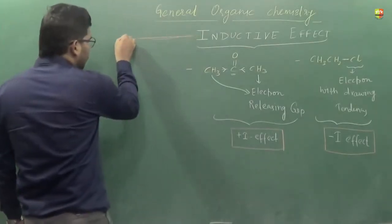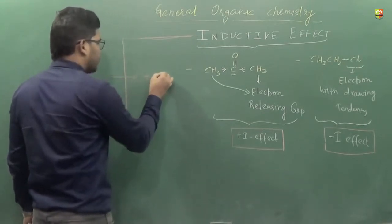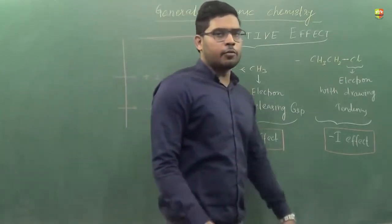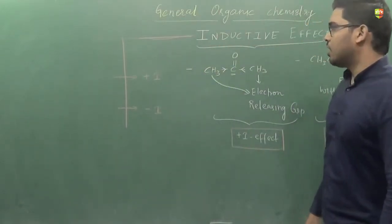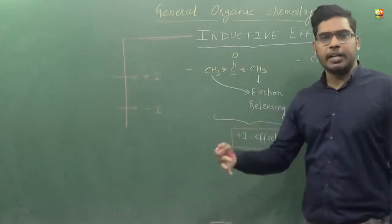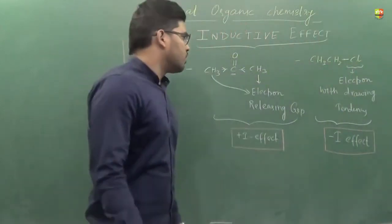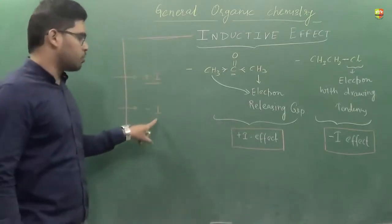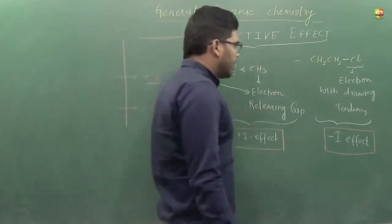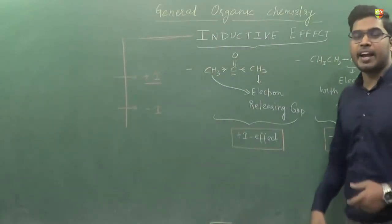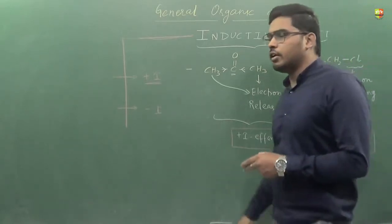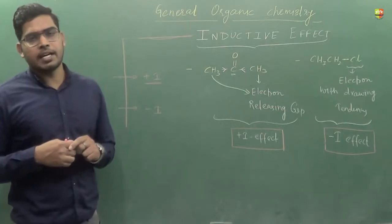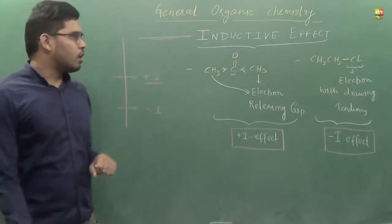We can classify the inductive effect into two different categories: the first one is plus-I and the second one is minus-I. The groups which show plus-I nature and the groups which show minus-I nature — depending on that, we will discuss stability and acidic and basic nature. Generally, the number of groups showing plus-I nature are very few in comparison to minus-I. So first, let's discuss minus-I groups.